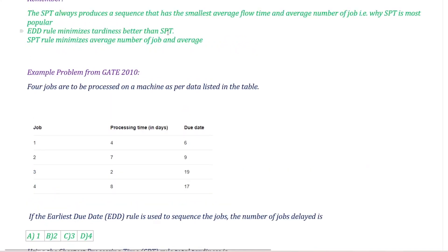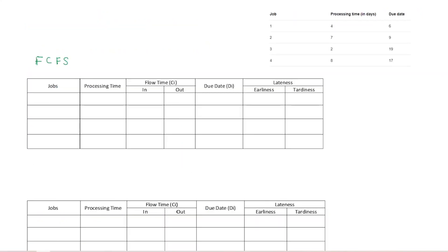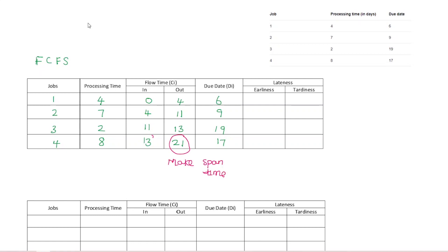For average flow time, we check SPT. That is correct. For FCFS, jobs are in order 1, 2, 3, 4. Processing times are 4, 7, 2, 8. Due dates are 6, 9, 19, 17. Now we calculate the flow time. Starting: job 1 flow time is 4. Then 4 plus 7 is 11. Then 11 plus 2 is 13. Then 13 plus 8 is 21. So 21 is the max span time — the entire job set is completed. Total flow time: 4 plus 11 plus 13 plus 21. Now the job lateness: the formula is Ci minus Ti.